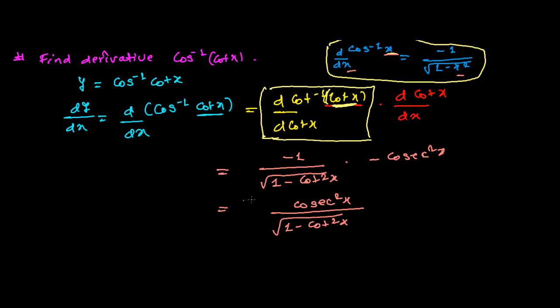So minus times minus gives plus, and we can write the result as cosec²x divided by the square root of 1 minus cot²x. This is our required derivative. This is how we find the derivative of inverse trig functions. Now suppose if you forget this formula in the exam — you didn't know it — how will you solve it and still get full marks?